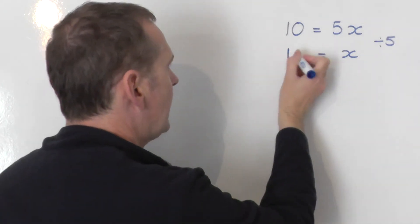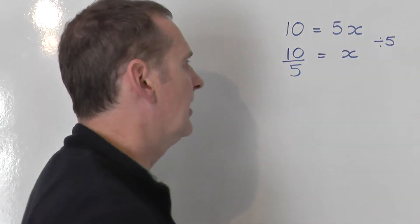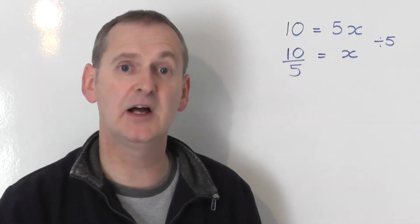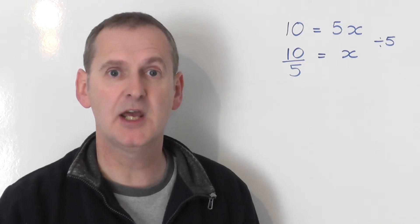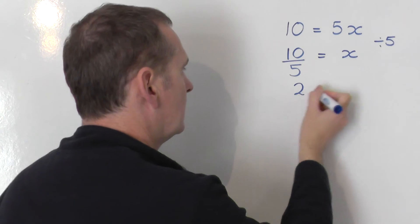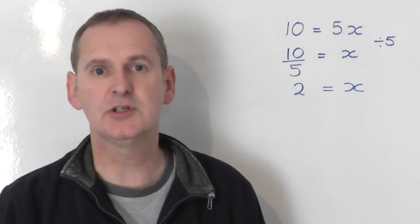So I'm going to take the 10 on the left-hand side, and I'm going to share it by 5. Now we work out 10 share by 5 on the left-hand side. 10 share by 5 is 2. And so 2 is equal to x is the solution to this equation.